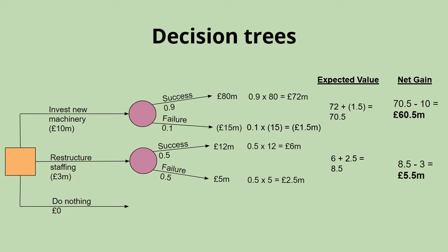Based purely on this decision tree, the option that we would favor would be to invest in the new machinery because it gives us a significantly higher net gain.